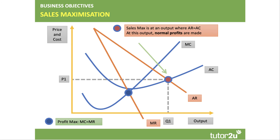Some firms go for growth maximisation. For a question on Amazon or fast-growing businesses like Netflix, in the short term they're going for growth maximisation. They need to cover their costs, so they need a price at least equal to average cost. Their main aim is to maximise output to achieve the biggest market share. You maximise output consistent with normal profit at the output Q1 where average revenue meets average cost.